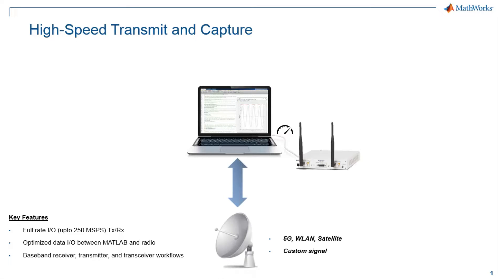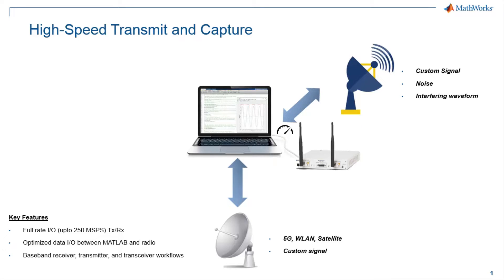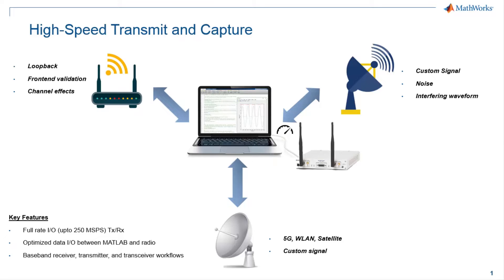The baseband receiver captures signals such as 5G, LTE, satellite, and custom signals from the air. The baseband transmitter can transmit custom or standard-based waveforms, as well as noise or interfering waveforms. The baseband transceiver can analyze channel effects such as signal attenuation and multipath, assess the performance of radio hardware and analog front ends, and enables loopback workflows.